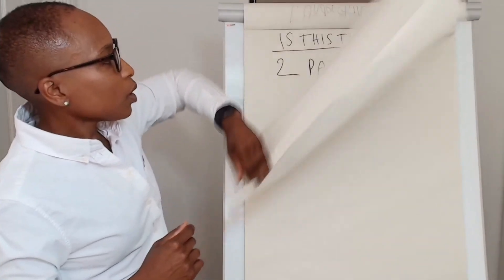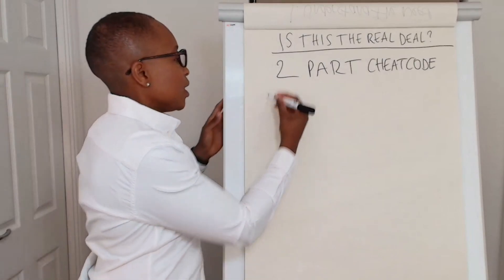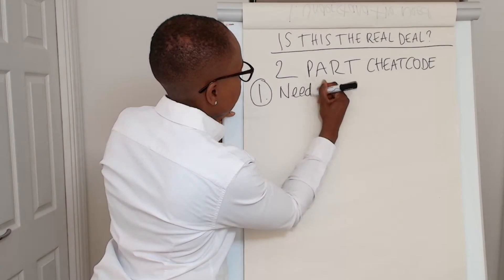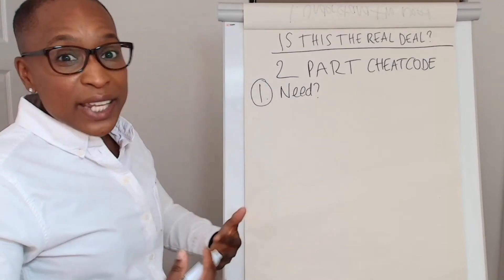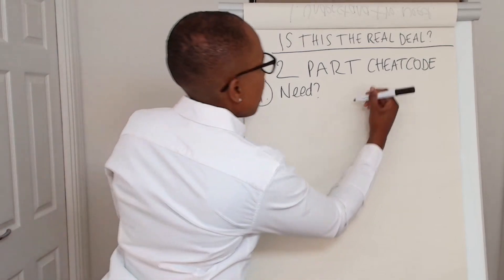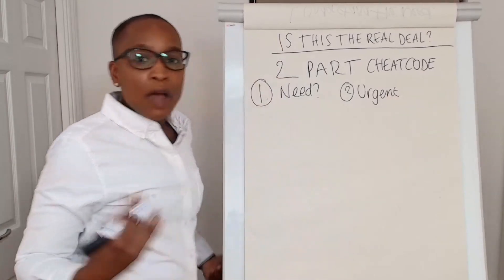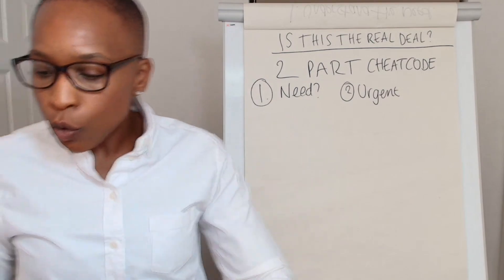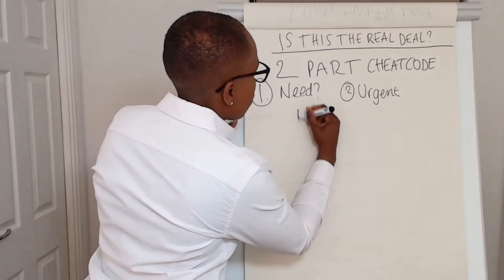So let's get into the content and figure out: is this a real deal? We're going to go through a two-part cheat code. The first part is really understanding what is the need — what has this prospect explicitly stated is happening inside their organisation, and how urgent is it? What I like to call this is the Issues, Challenges and Opportunity Framework — we're going to call it ICM.